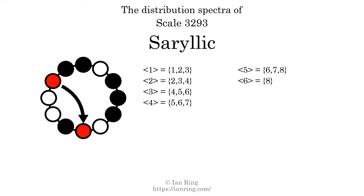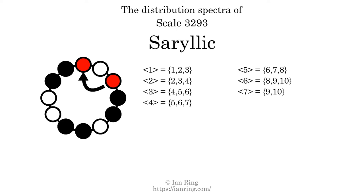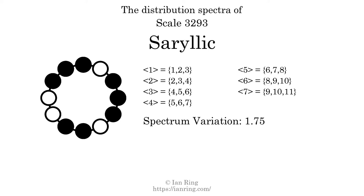And finally, the generic interval of 7 scale steps comes in 3 different specific interval sizes: 9 semitones, 10 semitones, and 11 semitones. The spectrum width of this generic interval is 2. The spectrum variation is the sum of all the widths divided by the number of tones. The spectrum variation of this scale is 1.75. Since the variation is greater than 0, this indicates that the scale is not perfectly even. The highest spectrum width is 2; since this is greater than 1, we know that this scale is not maximally even.